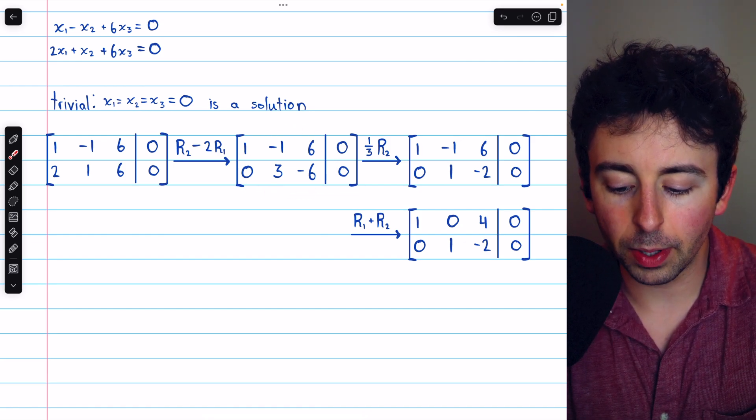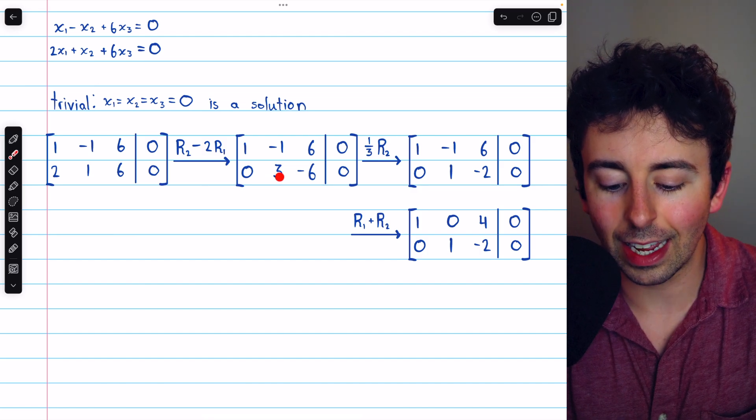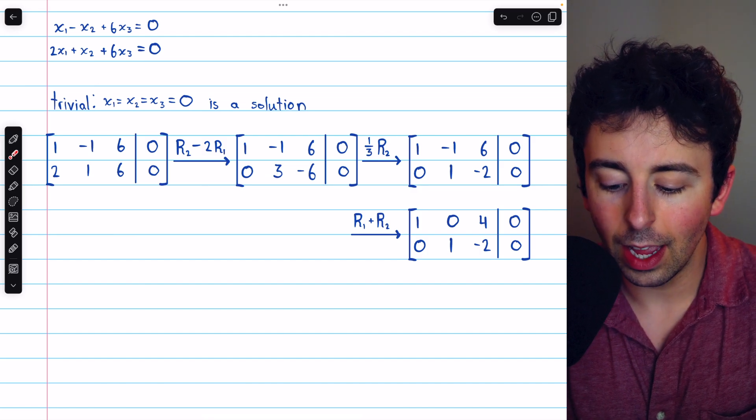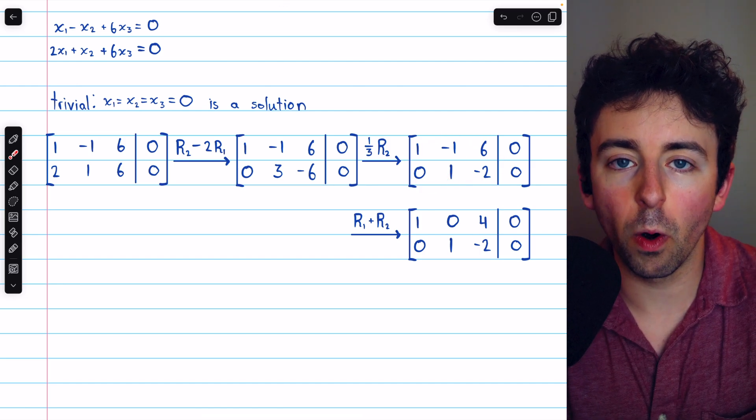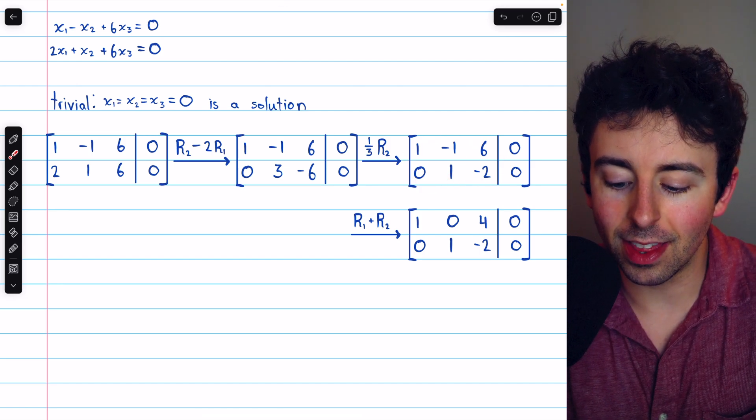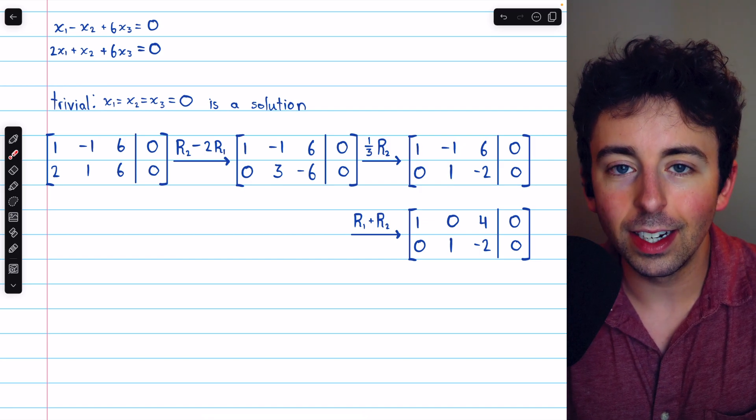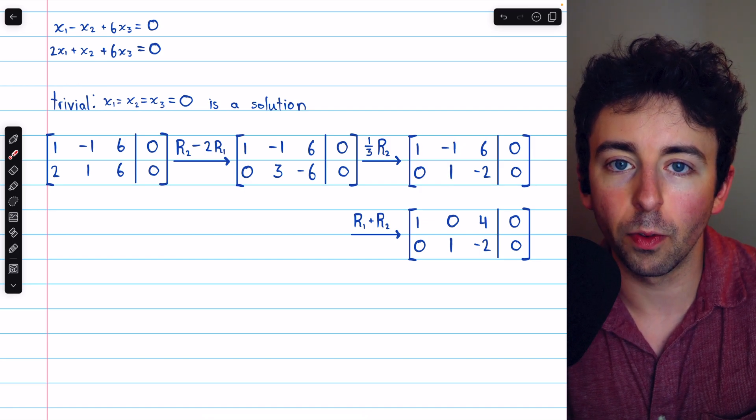Then we can multiply row two by one-third, so this leading entry becomes a positive one. And that gets us here. This is now in row echelon form.